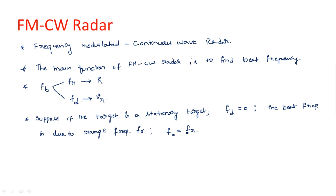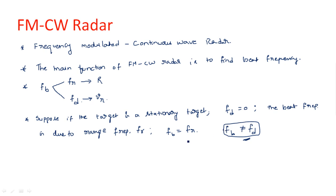The case where fb equals fd alone will never occur. If a target is present, fr is definitely also present. If the target is stationary, only fr is there. If it is moving, fb equals fr plus or minus fd. So fb equals fd by itself is an impossible case.